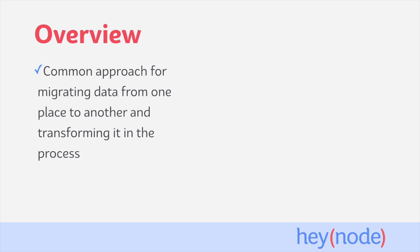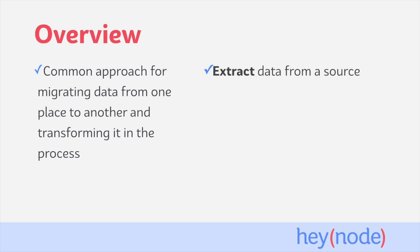The most straightforward definition of an ETL pipeline is a process that helps you migrate data from one location to another, while also changing the data along the way. The pipeline is made up of three distinct steps. The first step is the Extract step — this is where we gather the raw data that we need from our data source. It acts as the input into our ETL pipeline.